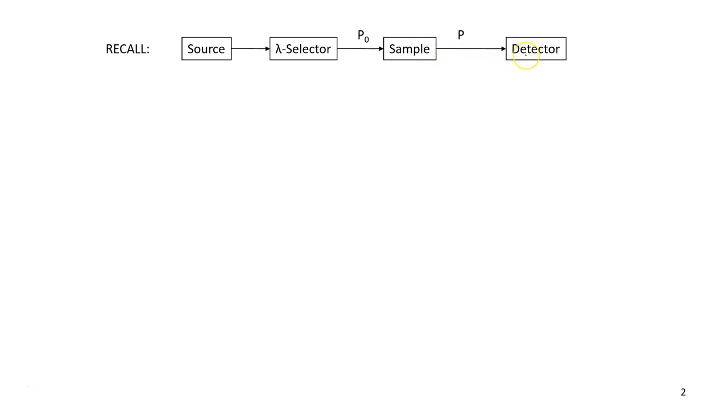And then a transducer. In a flame, the components are very similar. The light source, however, is a hollow cathode lamp. The sample is not found in a cuvette. It's found in a flame. But you still have a wavelength selector and a detector.